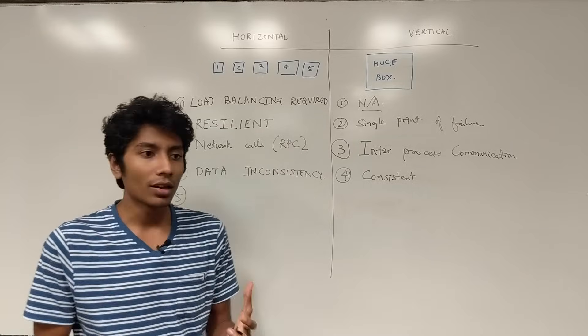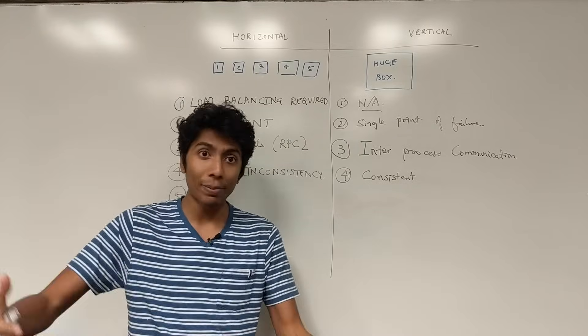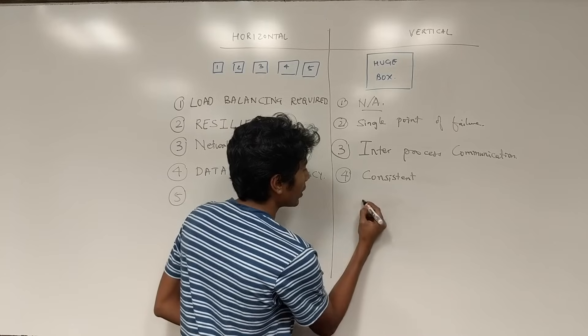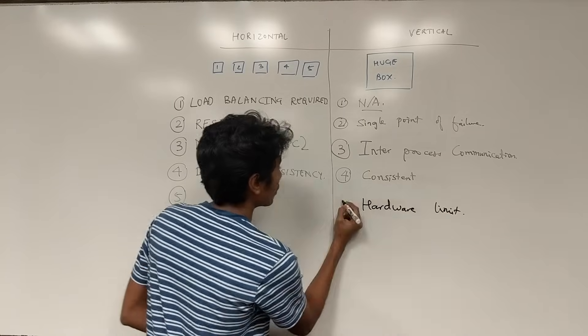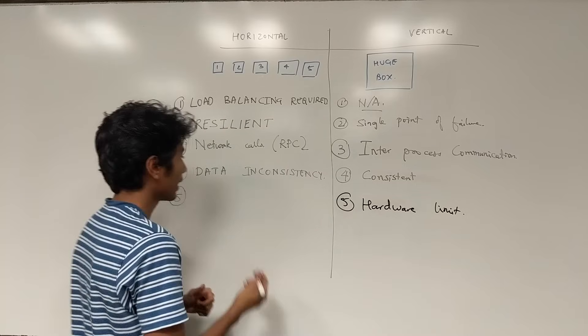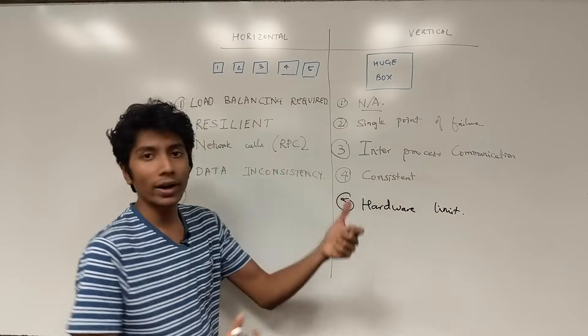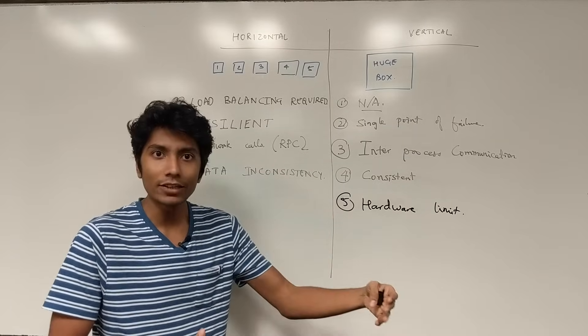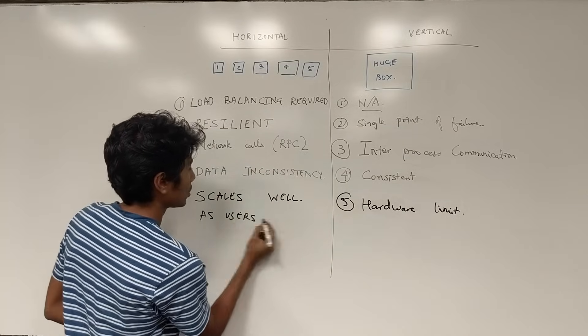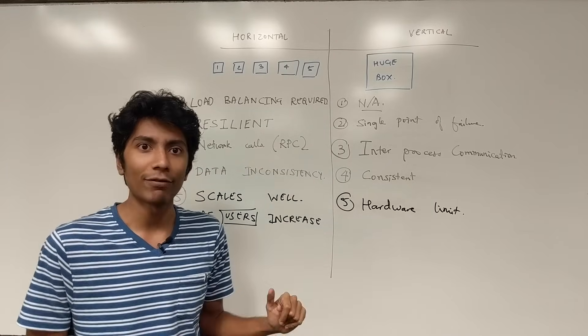The final point deals with some hardware limitations that you are going to have, because we cannot just make the computer bigger and bigger and bigger and solve the problem. There's going to be some hardware limit that we have here. That's point number five. And over here this scales well in the sense that the amount of servers that you throw at the problem is almost linear in terms of how many users are added. These are the five key differences that vertical scaling and horizontal scaling have.